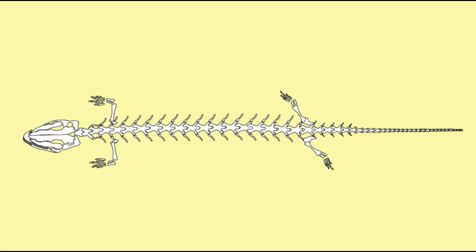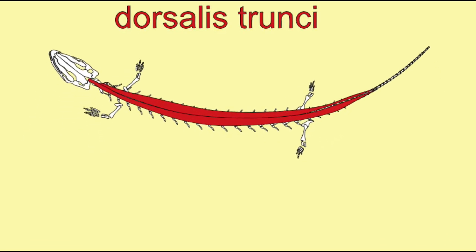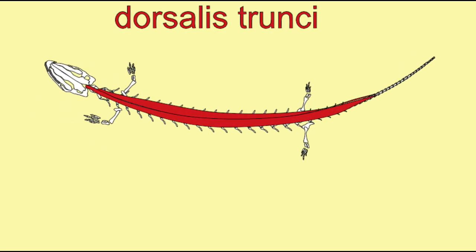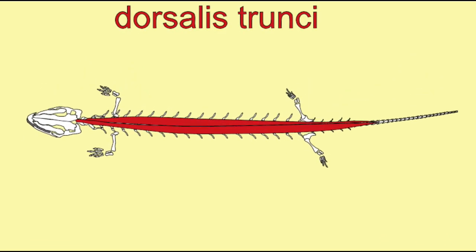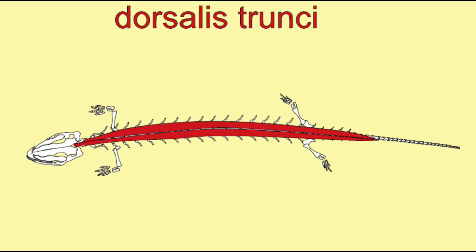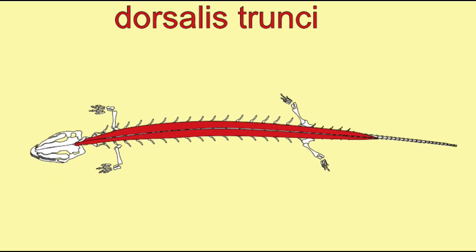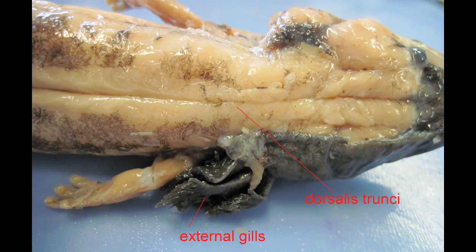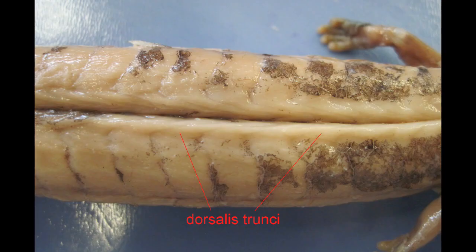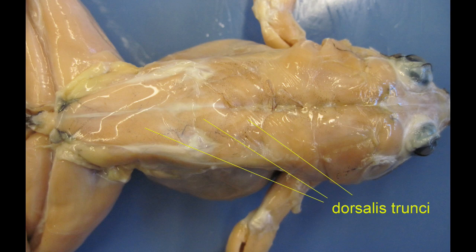In early tetrapods, the epaxial musculature was retained as a single muscle, the dorsalis truncti, that salamanders could still use for lateral flexion of the back. In frogs, this is less important in locomotion.